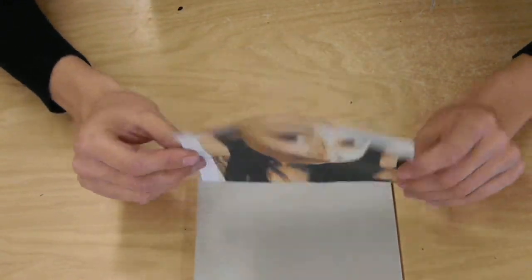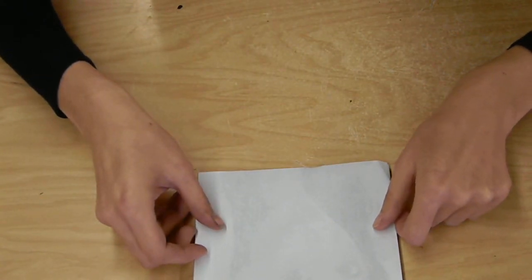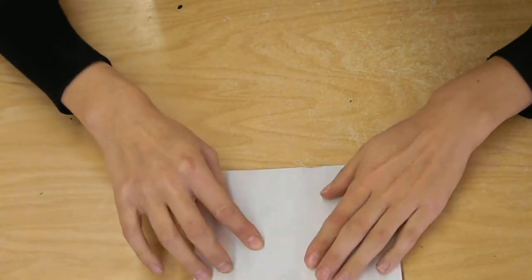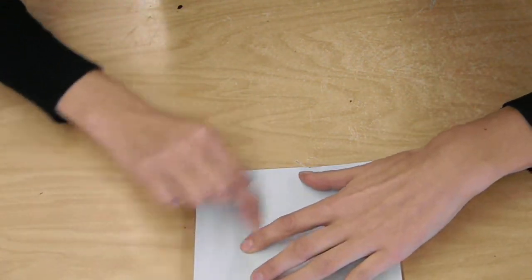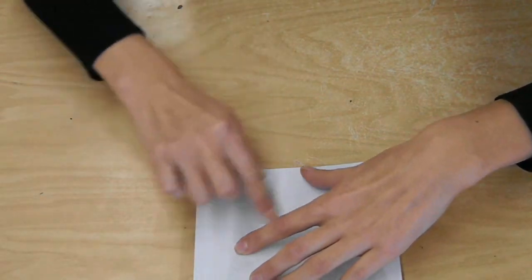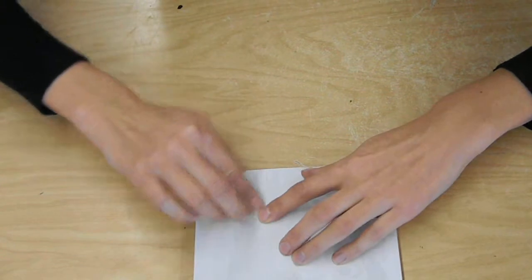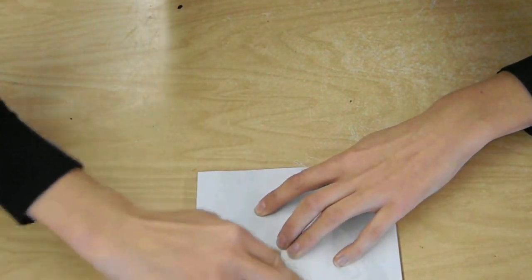Once I have my picture full of the graphite medium, I'm going to take it and flip it over and line it up. I want to hold it down with one hand, and then I'm just going to go over it and rub all the sections of my photograph.